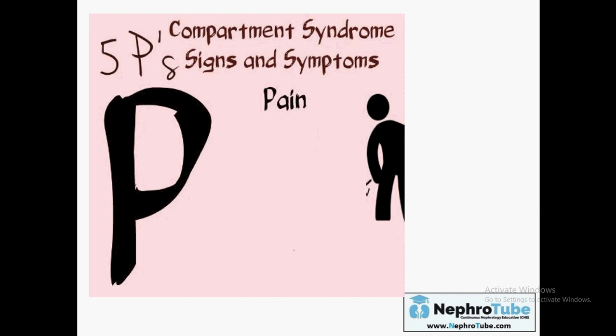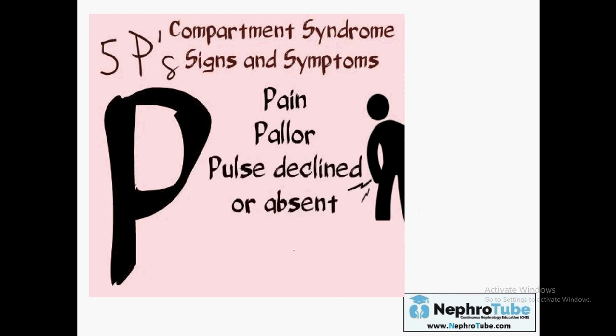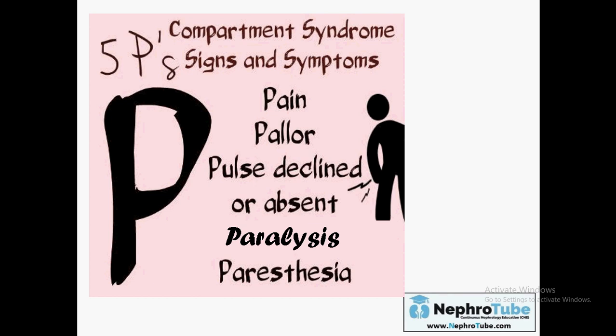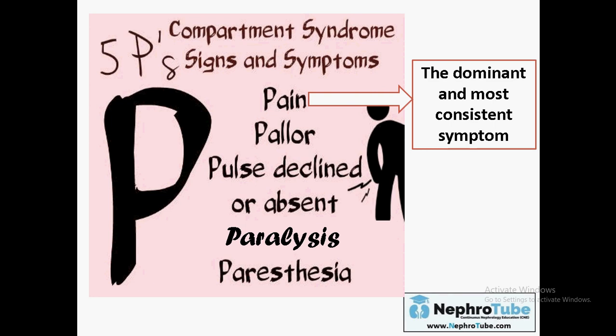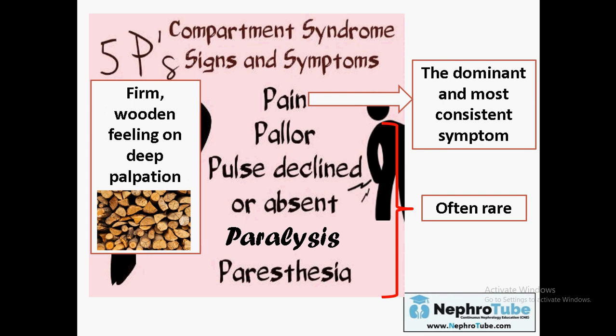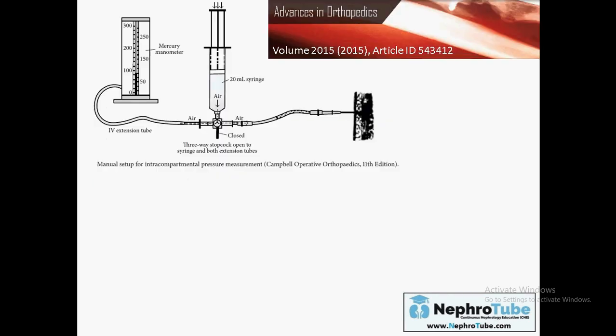Compartment syndrome presents with the five P's: Pain, Pallor, Pulse declined or absent in the affected limb, Paralysis, and Paresthesia. Pain is the dominant and most consistent symptom. The other signs and symptoms are rarer, and the muscle on deep palpation is very hard.